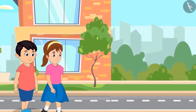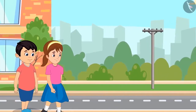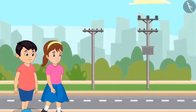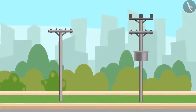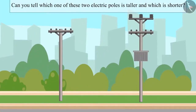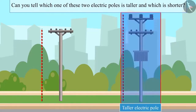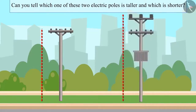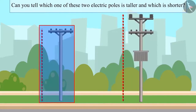After walking a little further, Chotu and Aarti saw two electric poles. So children, can you tell me which one of these two electric poles is taller and which one is shorter? Yes, this pole is taller and this one is the shorter one.